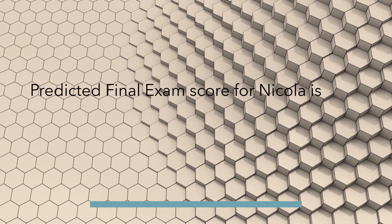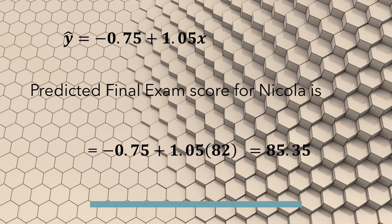Now we can use this regression line equation to predict the value. To predict the final exam score of Nicola, we take y-hat equals negative 0.75 plus 1.05x. Since her pre-final score is 82, plugging in x equals 82 and simplifying, we get 85.35. So we can easily predict Nicola's final exam score as 85.35.